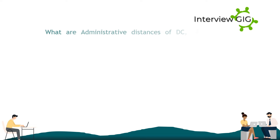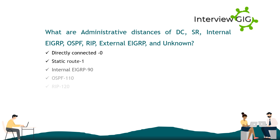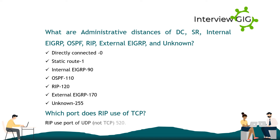What are the administrative distances of DC, SR, internal IGRP, OSPF, RIP, external IGRP, and unknown? Directly connected: 0. Static route: 1. Internal IGRP: 90. OSPF: 110. RIP: 120. External IGRP: 170. Unknown: 255.